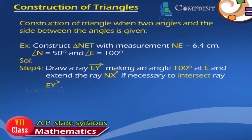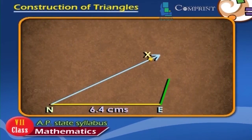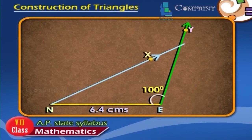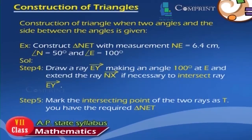Step 4: Draw a ray EY making an angle of 100 degrees at E, and extend ray NX if necessary to intersect ray EY. Step 5: Mark the intersecting point of the two rays as T. You now have the required triangle NET.